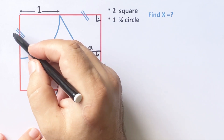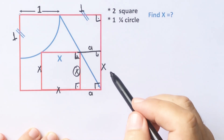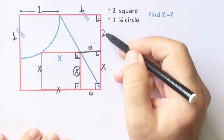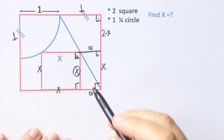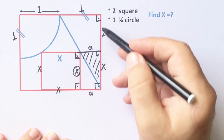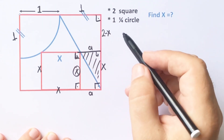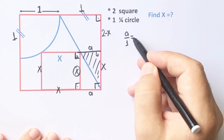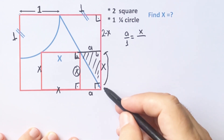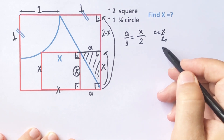If this is one unit, then this length equals one and this length is also one unit. The side of the square equals two units, so here must be two minus x units. If you focus on this triangle and this triangle, these are similar. So a over one equals x over the whole length two, therefore a equals x over two.